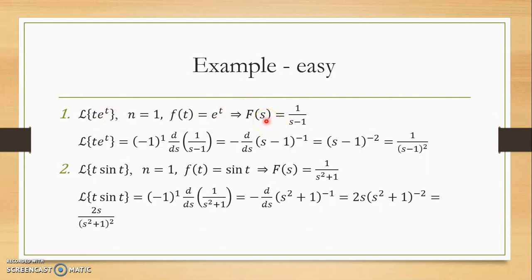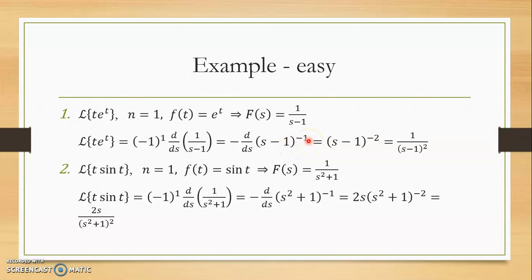The Laplace transform of e^t gives F(s) = 1/(s−1). We put all the information into the formula: L{t · e^t} = (−1)^1 times the first derivative of 1/(s−1). Negative one to the power of 1 is minus. Writing 1/(s−1) as (s−1)^(−1), we bring minus 1 to the front — minus times minus 1 is positive — giving (s−1)^(−2). Therefore the final answer is 1/(s−1)².